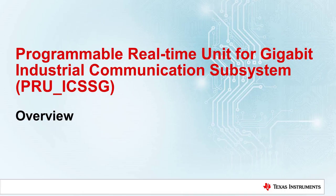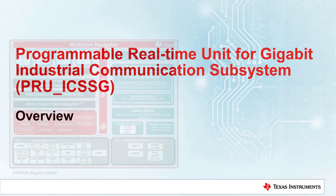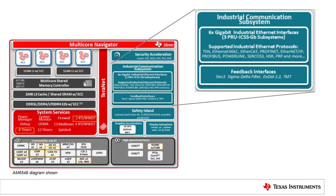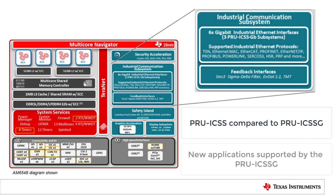Welcome to the PRU-ICSS-G Overview Training. During this module, we will introduce the PRU-ICSS-G. This is the next generation subsystem to the PRU-ICSS, adding gigabit capabilities. We will also discuss at a high level the hardware differences between the PRU-ICSS and the PRU-ICSS-G. And finally, we will look at examples of what new applications can be achieved with the PRU-ICSS-G.